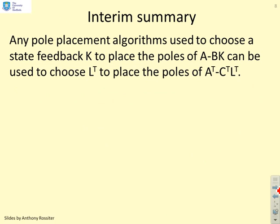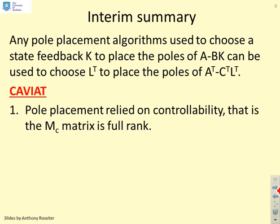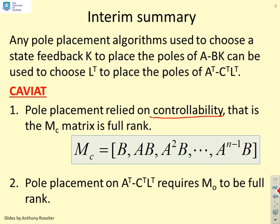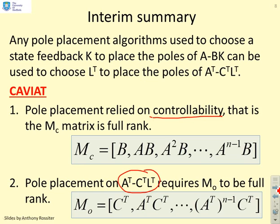So any pole placement algorithms used to choose a state feedback K to place the poles of A minus BK can be used to choose L transposed to place the poles of A transposed minus C transposed L transposed. There is, however, an important caveat. Pole placement relied on full controllability, so we wanted the controllability matrix to be full rank. Now, if you're going to do pole placement on A transposed minus C transposed L transposed, you need the equivalent controllability matrix, which is given by MO equals C transposed, A transposed C transposed, and so on. And we are going to need this MO to be full rank.